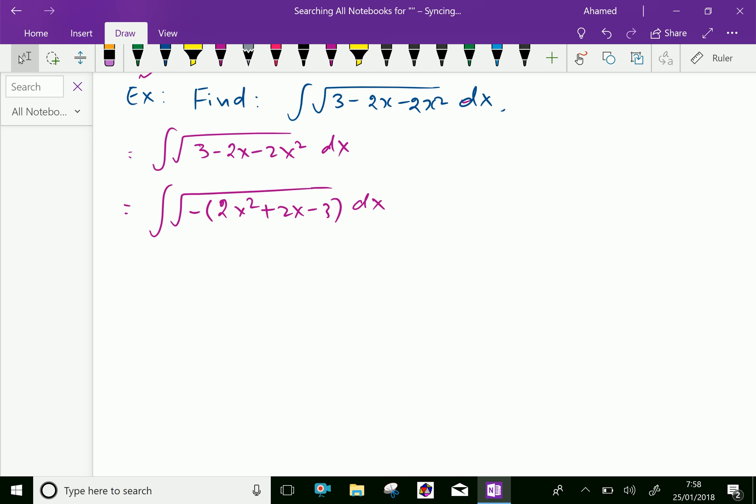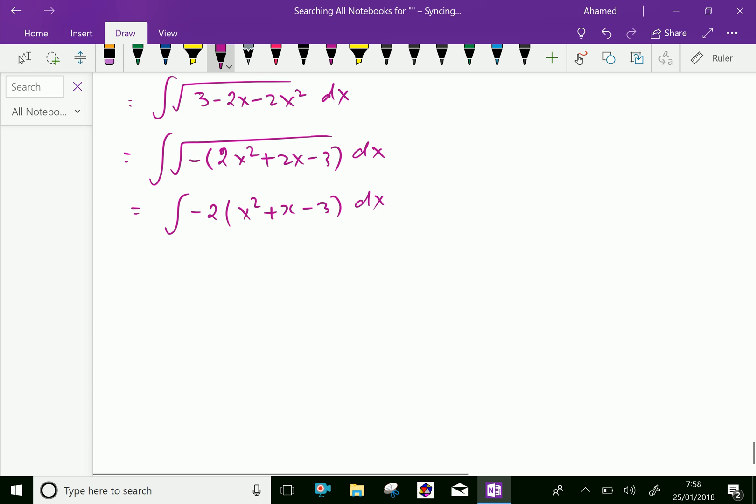Next, by completing square, before that, take 2 out, that is, x square plus x minus 3 over 2 dx. And further, 2 taken out under the square root gives square root of 2 out, and square root of minus x square plus x minus 3 over 2 is there.